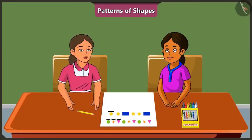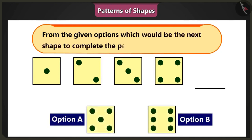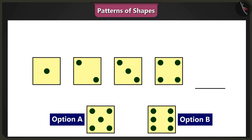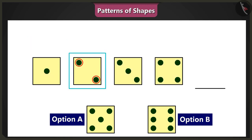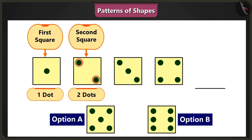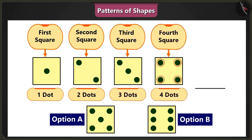Yes, now you are correct — this is fun. Complete the pattern you see here by choosing one of the two options. But all these are square shapes — there is no pattern here. Oh, look closely — all the squares have dots inside them and the number of dots varies in each square. The first square has one dot and the second has two; the third square has three and the fourth has four. The dots are in ascending order. So according to this pattern, the fifth square will have five dots in it.